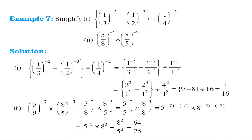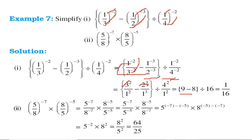We have to simplify this expression. It can be written as 1 to the power minus 2 over 3 to the power minus 2, minus 1 to the power minus 3 over 2 to the power minus 3, all divided by 1 to the power 4 over 4 to the power minus 2. Moving numerators and denominators using the negative exponent rule, we get 3 squared by 1 minus 2 cubed by 1, divided by 4 squared. That is 9 minus 8 divided by 16, which equals 1 by 16.